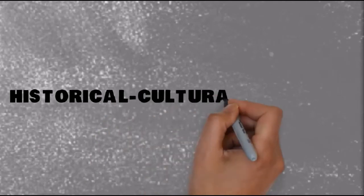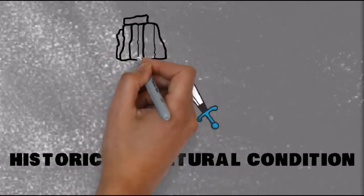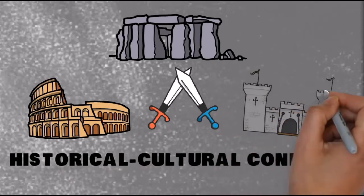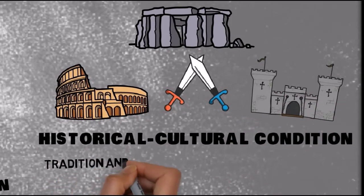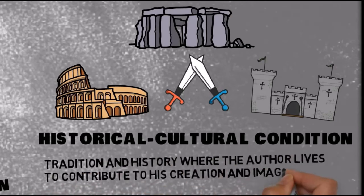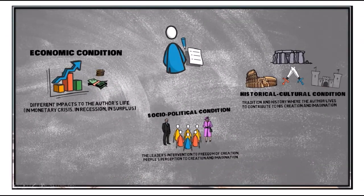Now we move on to the last element: the historical and cultural conditions of the author's surroundings. The different history of where or when the author lives contributes to his way of setting his work. When the author writes a story during wartime, he can describe those situations more accurately. Likewise, an author can create a work referring to traditional customs that cannot be found in other places or other eras. So these are the three extrinsic elements related to the author's surroundings.